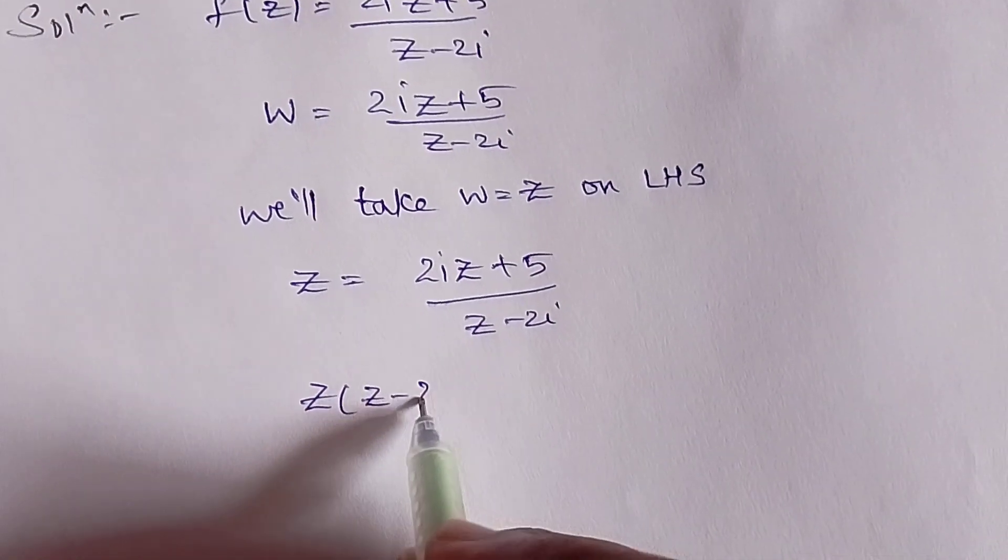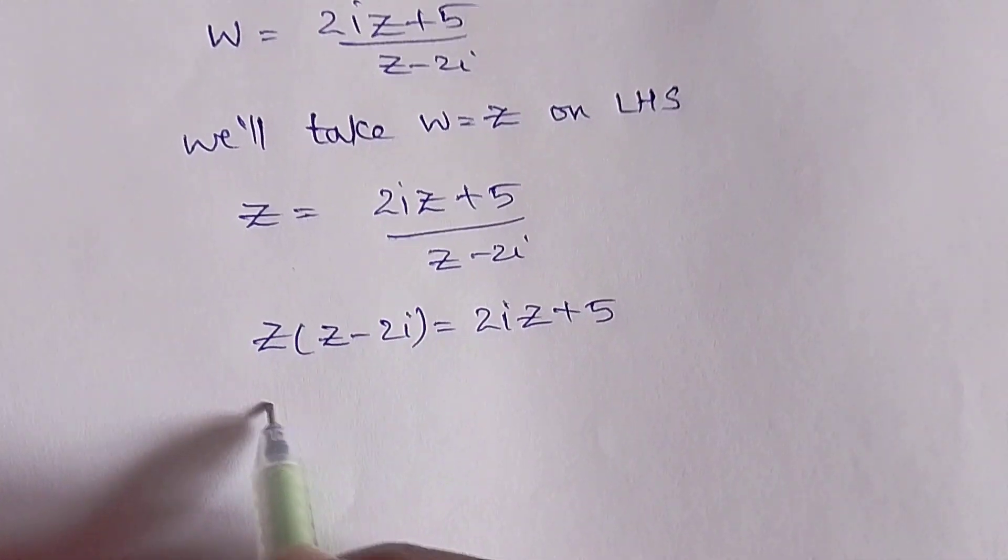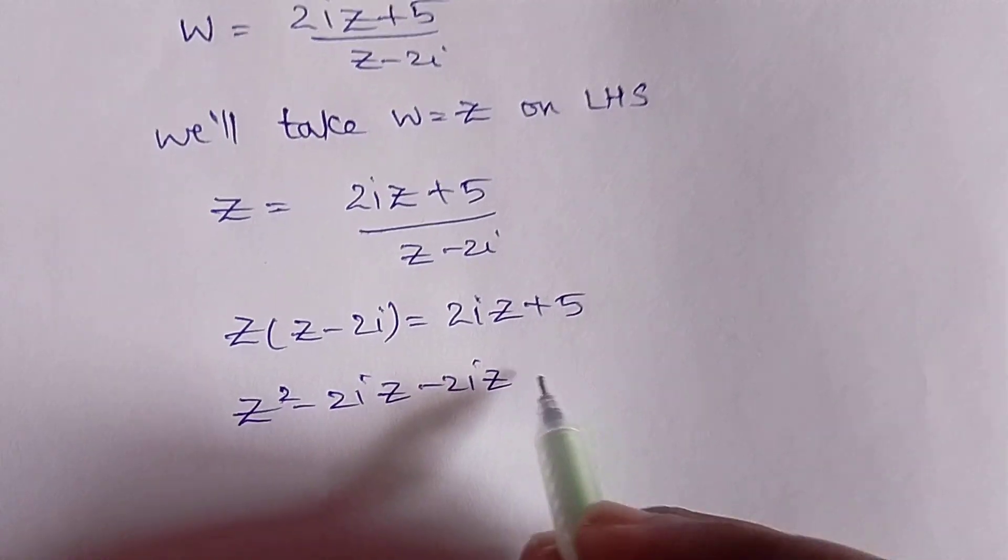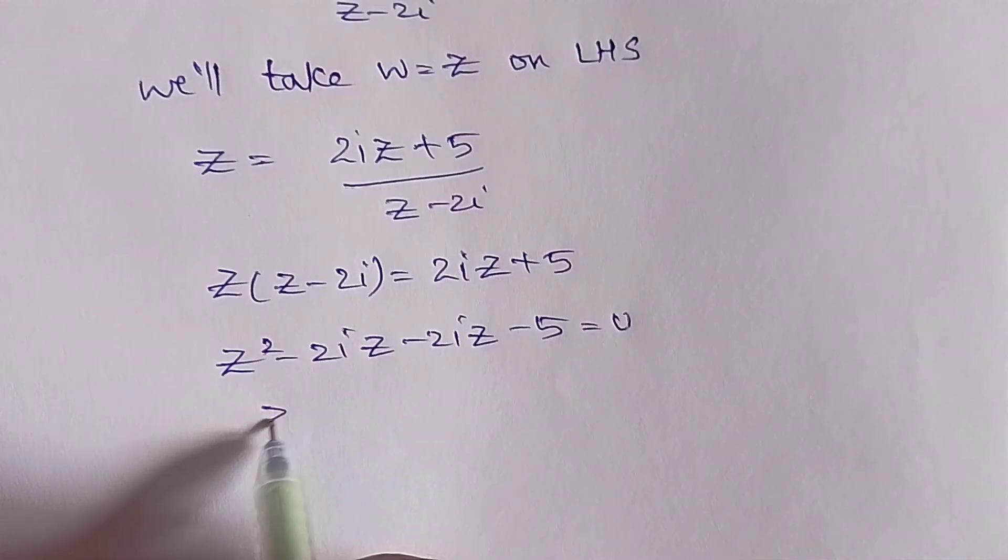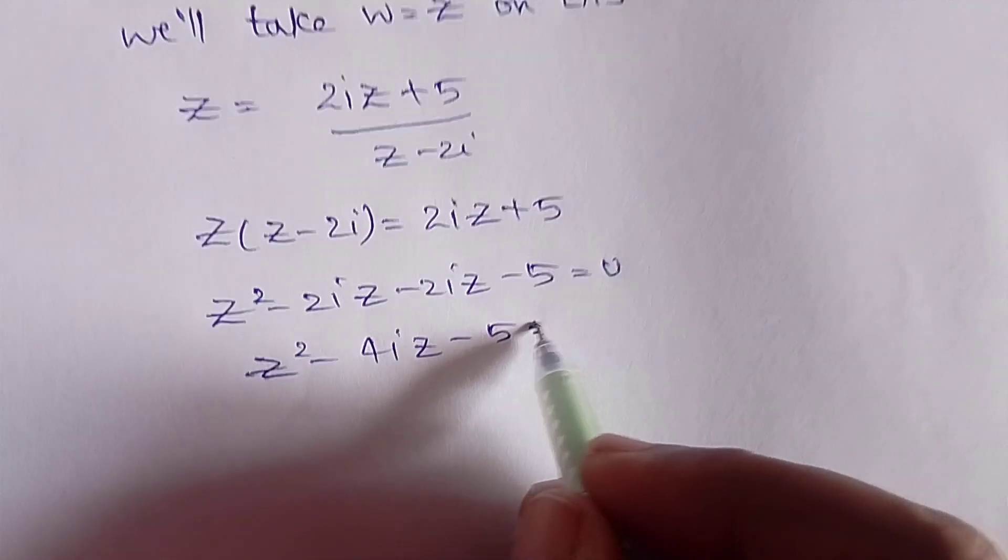We will cross multiply and find the factors of z. When you simplify, you will get z² - 4iz - 5 = 0.